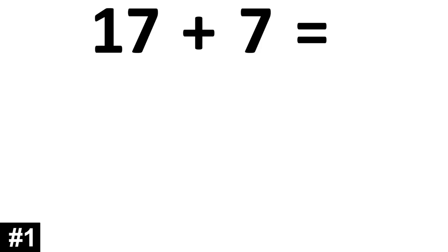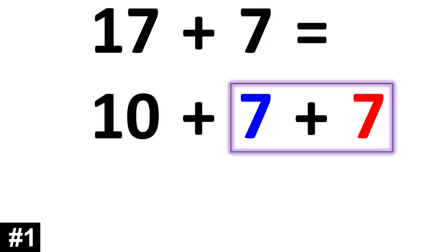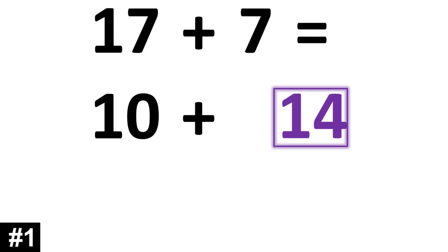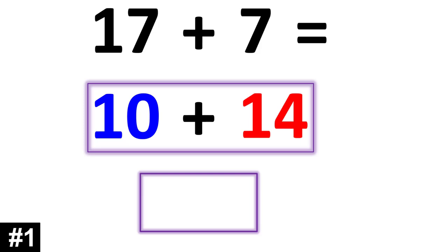The key is first recognizing that any two-digit number such as 17 can be broken down into tens and ones — it's the same thing as 10 plus 7. So now we're just adding 10 plus 7 plus the other 7. 7 plus 7 is equal to 14. So now we just add that 14 to the other 10. 10 plus 14 is 24. So 17 plus 7 is 24.